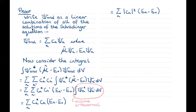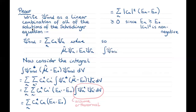This is immediately seen to be greater than or equal to zero, because by definition Eₙ is greater than or equal to E₀ since E₀ is the ground state energy, and the square modulus of any complex number is non-negative. So we've shown that the integral of ψ_trial* times (H − E₀) times ψ_trial over all space is greater than or equal to zero — or equivalently, the expectation value of the energy for the trial wave function is greater than or equal to the ground state energy, which is what we set out to prove.